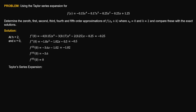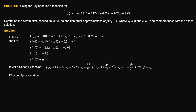Let's write the Taylor series expansion to estimate the function value at h = 2. For the first order approximation, we consider the Taylor series expansion up to the first derivative — only the first two terms. So f(0 + 2) = f(x₀) = 1.25, plus h = 2 times the first derivative value of negative 0.25, giving a first order approximation of 0.75.